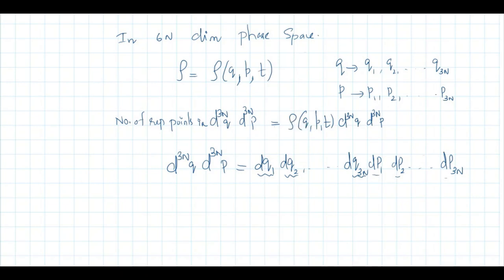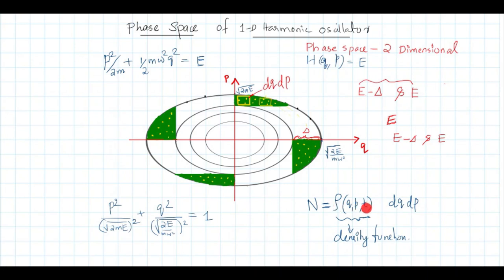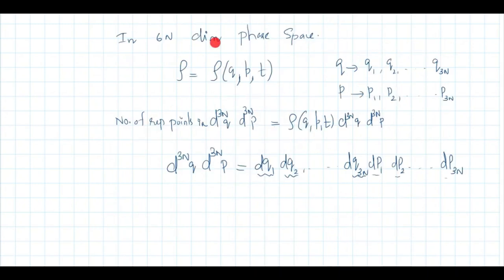The density ρ is a function of position (Q, P) and time t because different area elements can contain different numbers of points, and as time passes, representative points move so the count changes. For example, one area element may contain 3 points while another has 4, so ρ depends on the location. This is the idea of the density function.